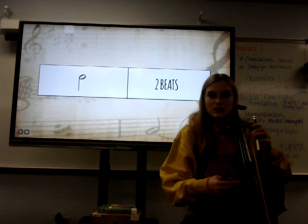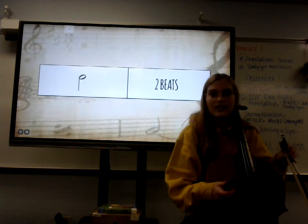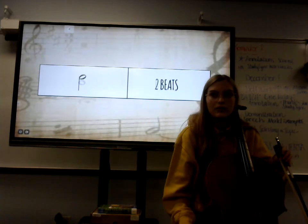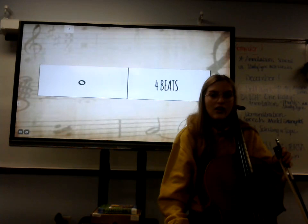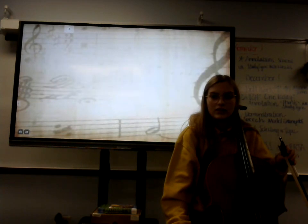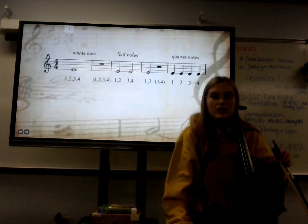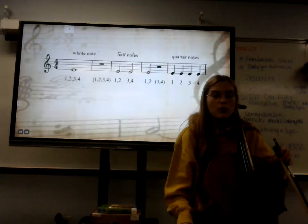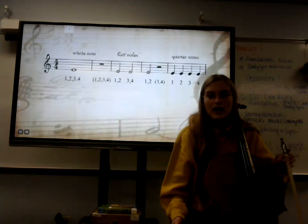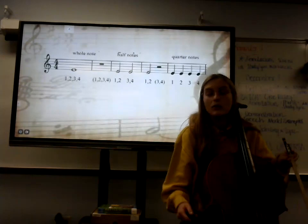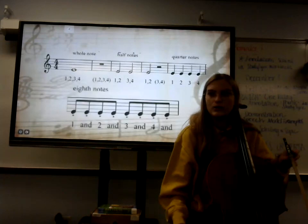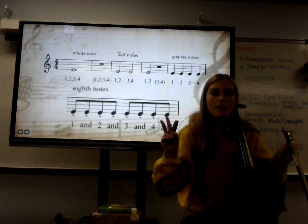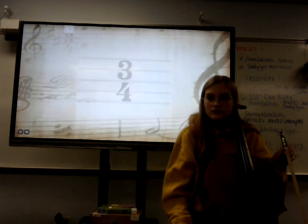If we go back to the quarter note and remove the inside of the head, we have a half note — two beats, counted as one, two, three, four. If we remove the tail entirely, we have a whole note — one, two, three, four. All of these notes come together to comprise our music. When counting shorter notes with flags, you add 'and' between beats: 'one and two and three and four and.'